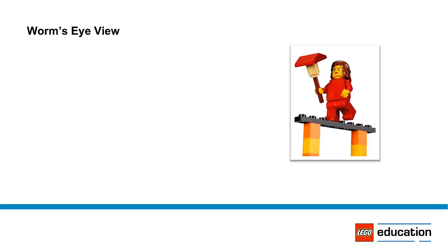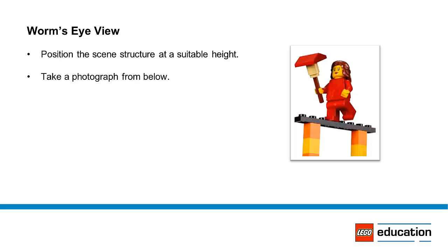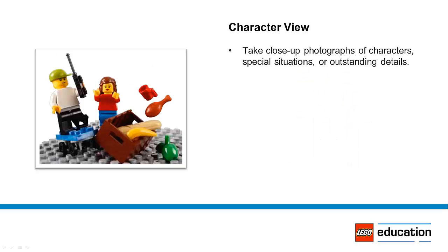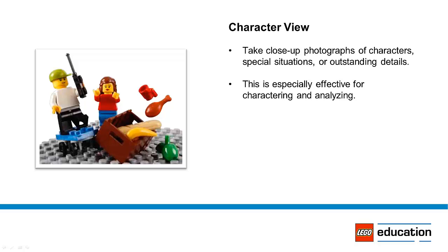Worm's Eye View: Position the scene structure at a suitable height and take a photograph from below. Character View: Take close-up photographs of characters, special situations, or outstanding details. This is especially effective for characterizing and analyzing.